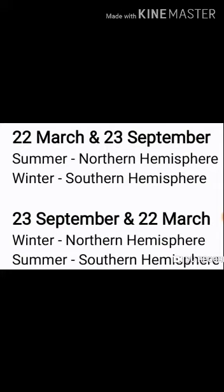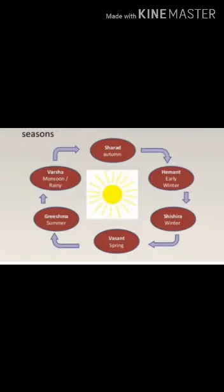It is summer in the Northern Hemisphere and winter in the Southern Hemisphere and what happens between 23rd September till 22nd March. From 23rd September to 22nd March, it is winter in the Northern Hemisphere and summer in the Southern Hemisphere.